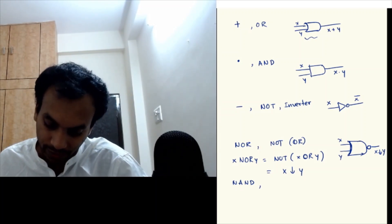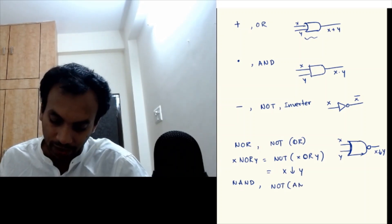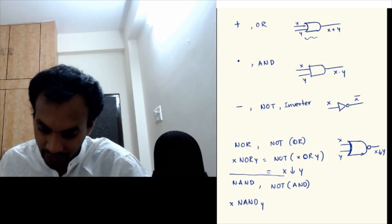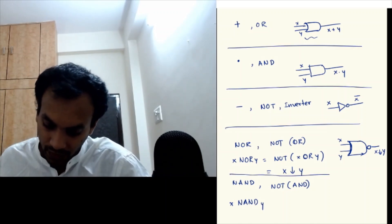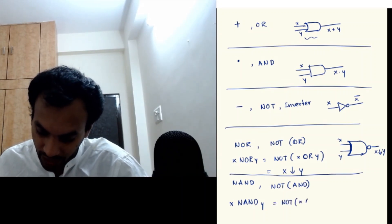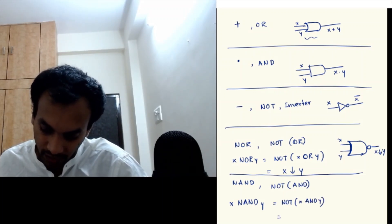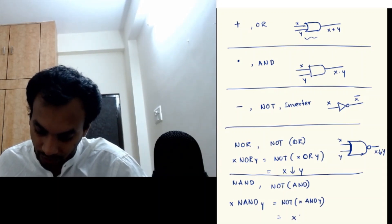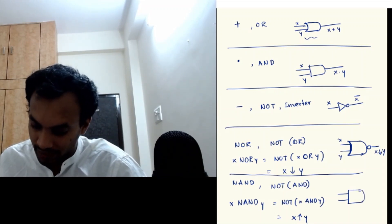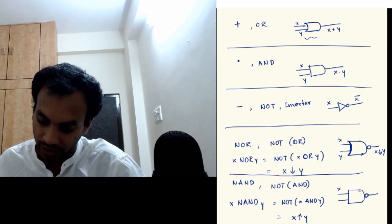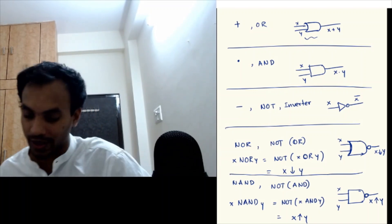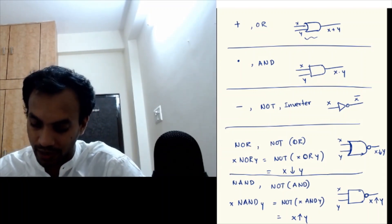The NAND gate is, as you'd expect, NOT of AND. X NAND Y is NOT of X AND Y, which is denoted by X up-arrow Y. The gate symbol for NAND is the AND gate notation with a circle in front, with inputs X and Y and output X NAND Y.